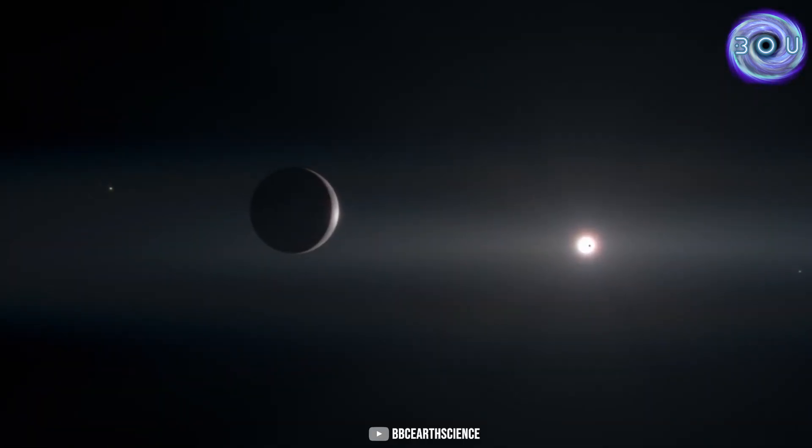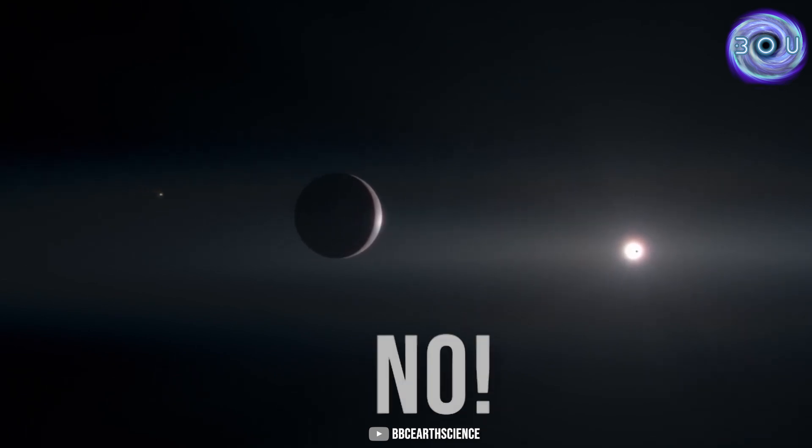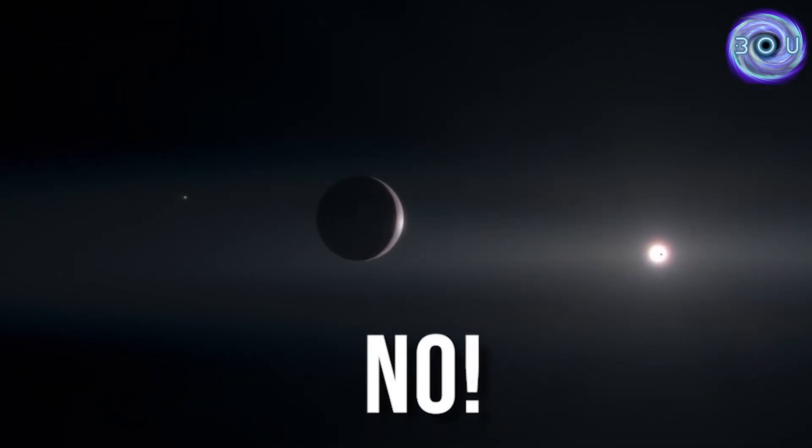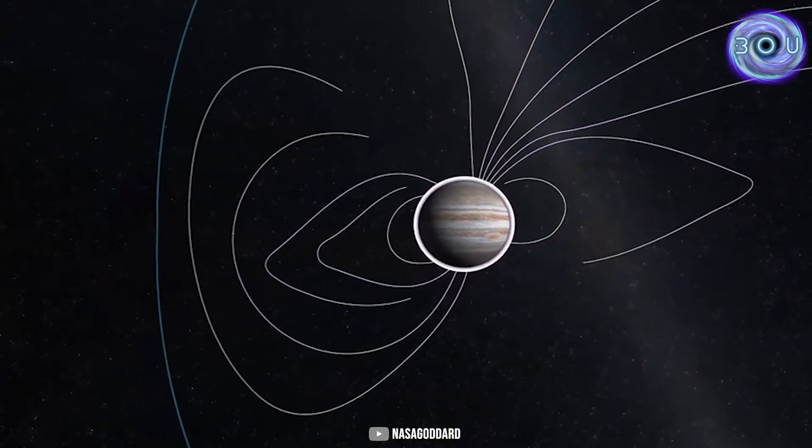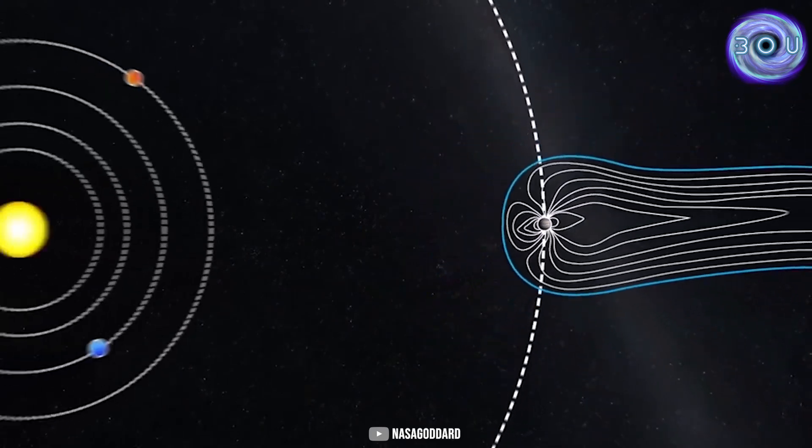But is Earth the only planet that has a magnetic field? We must answer no. For example, Jupiter has the strongest magnetic field in the solar system. The magnetic field of this planet is approximately 20,000 times larger than that of Earth.